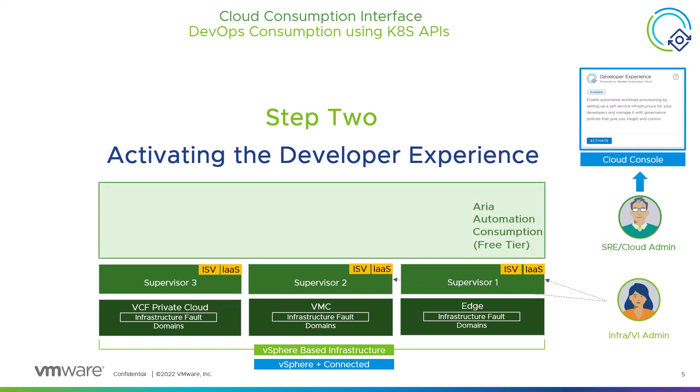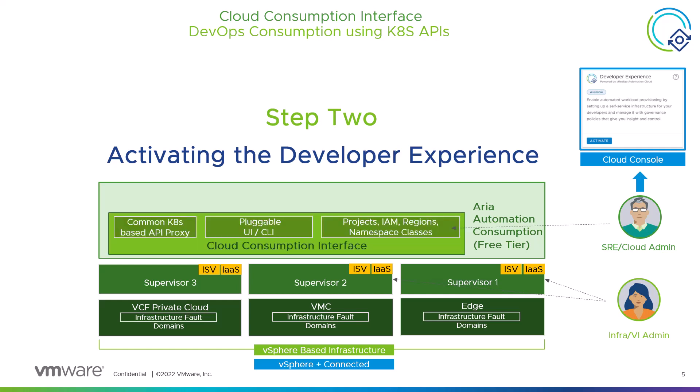This will activate ARIA automation free tier within your VMware Cloud Services organization and set up all the necessary building blocks, such as cloud accounts, projects, regions, and namespace classes that are needed to configure, manage, and use the cloud consumption interface capability within VMware ARIA automation.